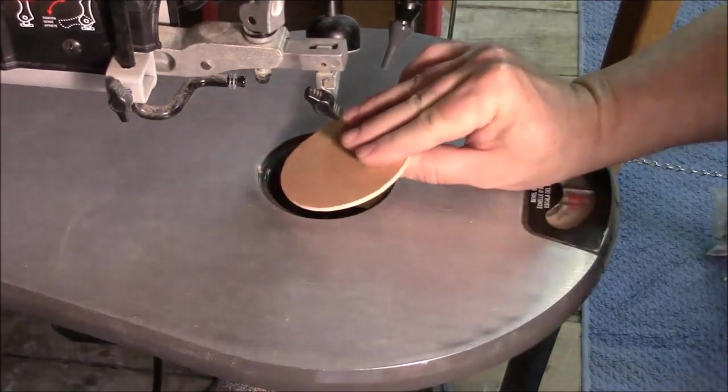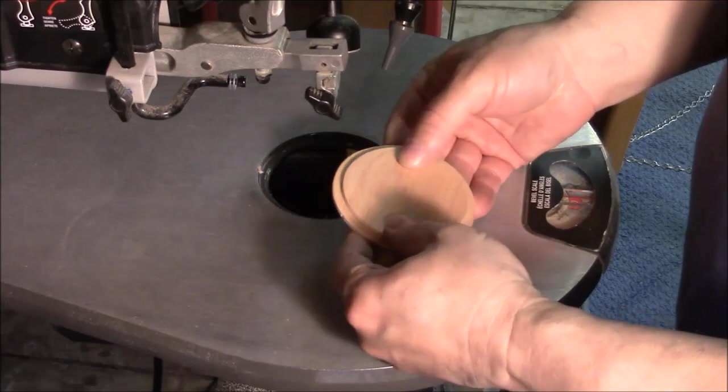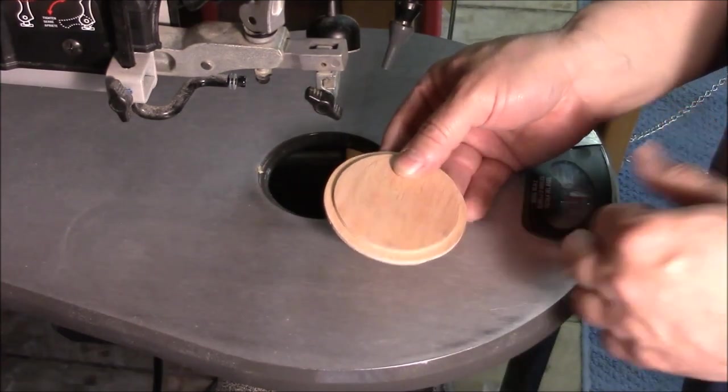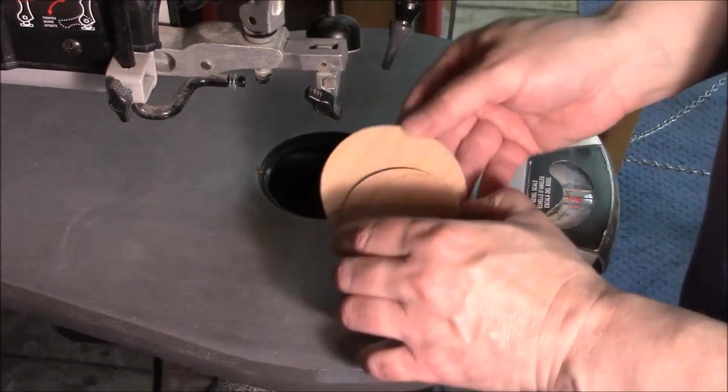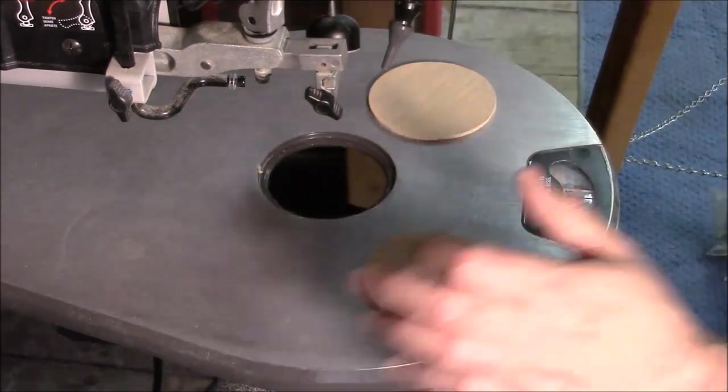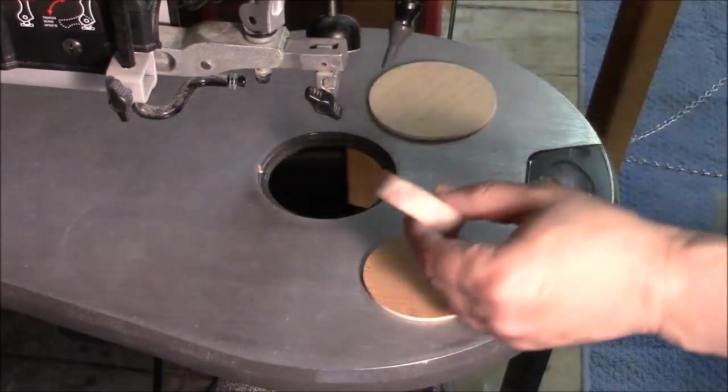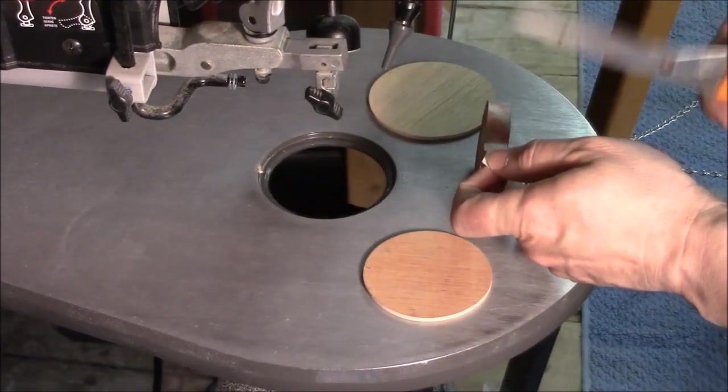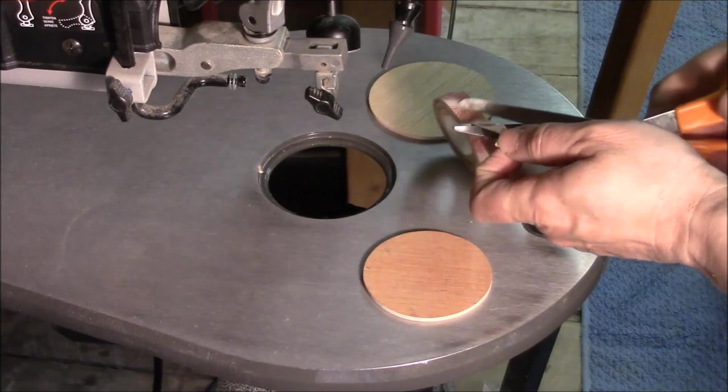Now the next thing to do is to glue these together. But you can't just take a guess on where to glue this. It's got to be pretty exact. So what I did was I took a piece of double-sided tape and put it on the smaller disc.